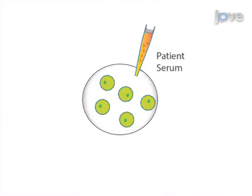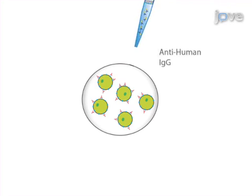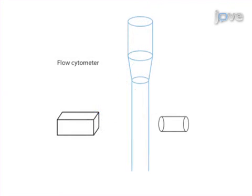Next, transfected cells are incubated with patient sera and an appropriate secondary antibody before flow cytometry acquisition, in order to detect antibody binding to cell surface antigens.